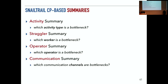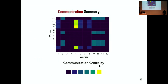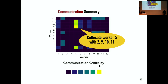The fourth summary type is a communication summary — a heat map of pairs of workers' communication. For example, if worker 5's messages with workers 2, 9, 10, and 11 are always on the critical path, you might want to collocate them. These are types of reconfiguration actions the stream processor could automatically perform. The SnailTrail code is available on GitHub.